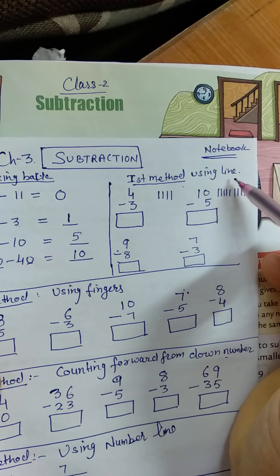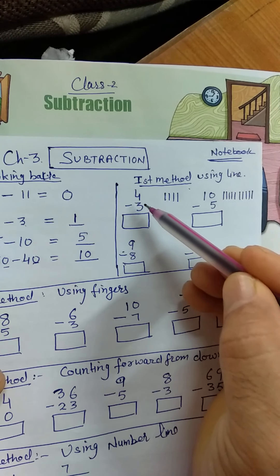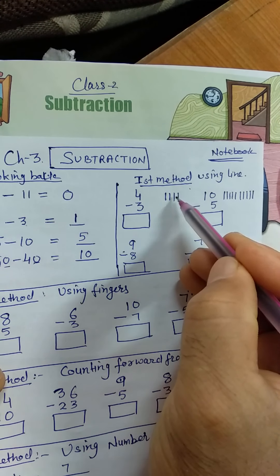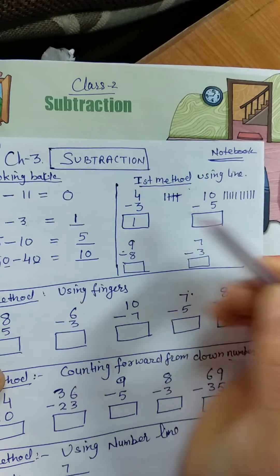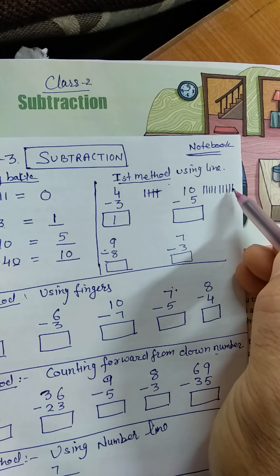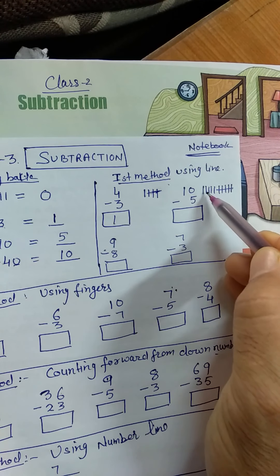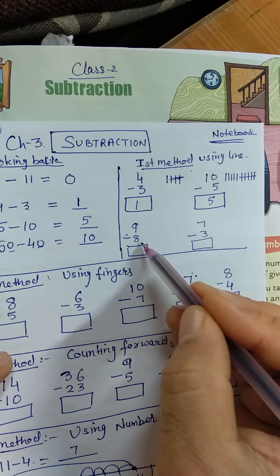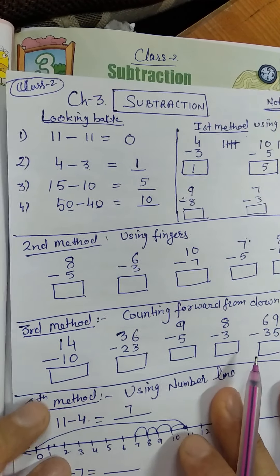The first method is using lines. If it is 4 minus 3, you draw 4 lines — 1, 2, 3, 4 — and cut 3 lines — 1, 2, 3. What is left is 1. For 10 minus 5, you draw 10 lines and cut 5 — 1, 2, 3, 4, 5 — and count what is left: 1, 2, 3, 4, 5. So the answer is 5. You can practice yourself with 9 minus 8 and 7 minus 3.